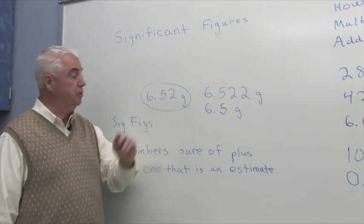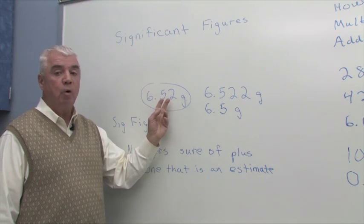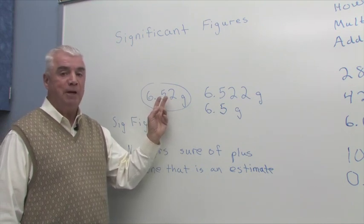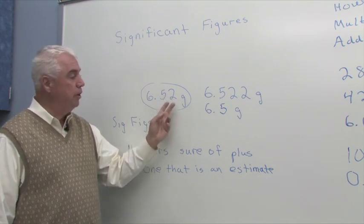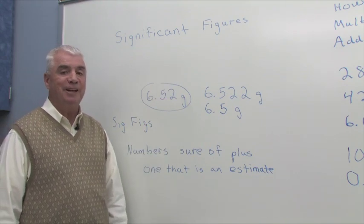it could be that 2 is really the value, or it might be a 1, or it might be a 3. But even though this last digit is an estimate, it's still considered a significant figure.